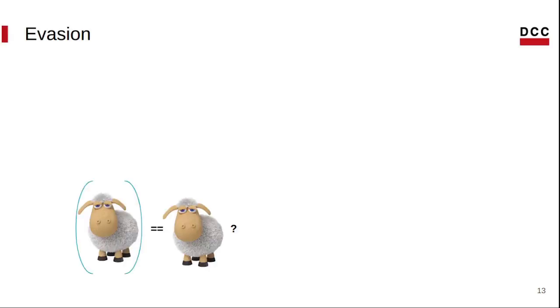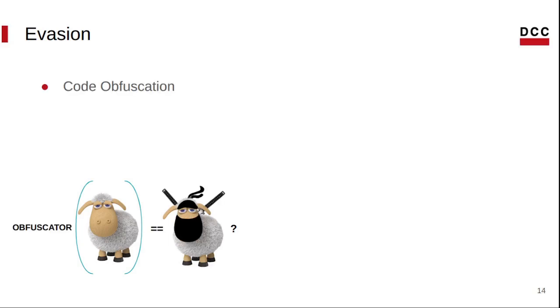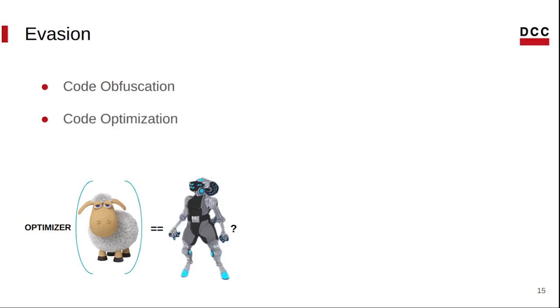For this reason, there has been significant effort to evade classification. Basically, an evader is a tool that transforms a program to hide its true purpose. Obfuscation is a typical example of an evader. But optimizations can also be used to evade classification, since they might change a program as much as an obfuscator.